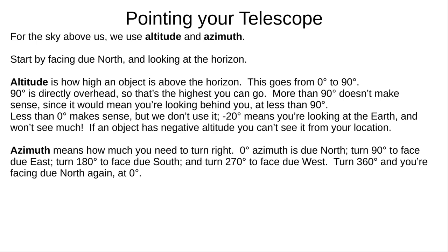First, we'll point our telescope upwards — somewhere between zero degrees at the horizon, to 90 degrees directly above you. Directly above is what we call our zenith. How far up we point is called altitude — how high above the horizon a star appears. If the altitude of a star is negative, you're out of luck, because there's a planet in the way. Next, you need to turn your telescope clockwise, or to the right — this is called azimuth. Zero degrees means north; turn 90 degrees and you're looking east; 180 degrees is south; 270 degrees is west; and 360 degrees is north again.